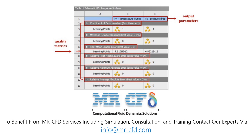This example uses the Kriging method to generate a response surface. This figure shows a table of quality criteria for each output parameter.